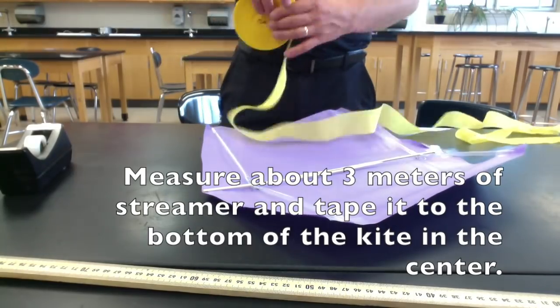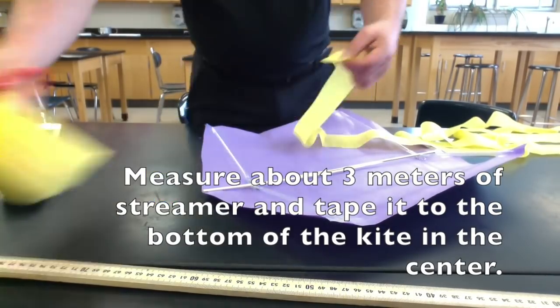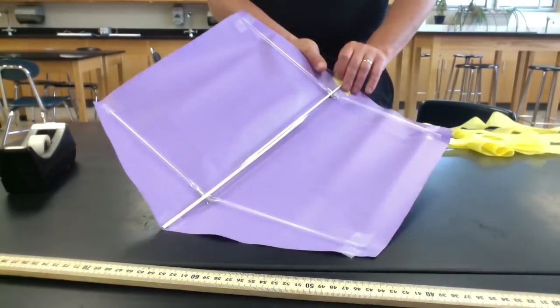Measure about three meters of streamer and tape it to the bottom of the kite in the center. This would be like a dragon tail.